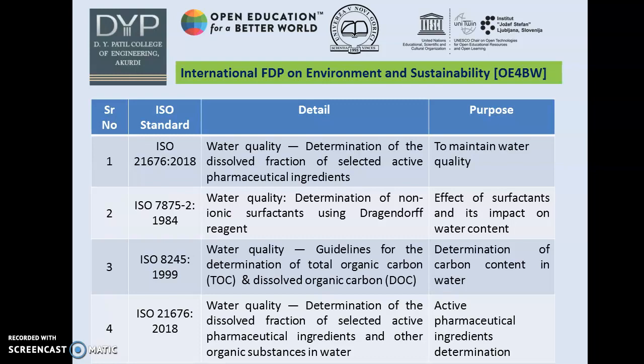These are the ISO standards for water quality — how pharmaceutical pollutants are occurring in our water bodies and contaminating water quality. ISO 21676: determination of dissolved fraction of selected active pharmaceutical ingredients to maintain water quality. ISO 7875: determination of non-ionic surfactants using Drag and Roff reagent. Many pharmaceutical products such as soap contain surfactants, and after use these surfactants dissolve in water and contaminate it. By using this reagent, one can evaluate the effect of surfactants and their impact on water content.